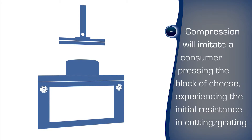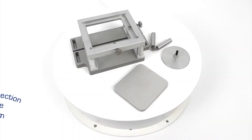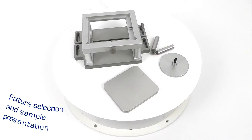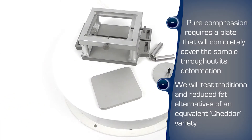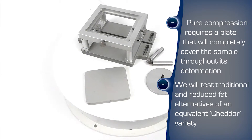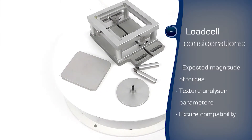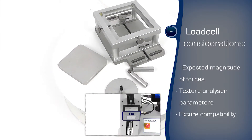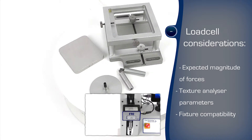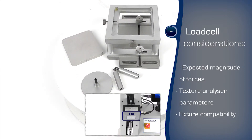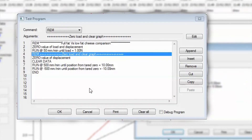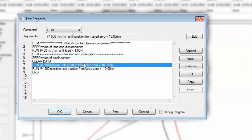A pure compression test to measure firmness will provide valuable information in determining the effects of a reduced fat formulation. The TMS Texture Analyzer is fitted with an FTC compression plate large enough in diameter for the face to remain in contact with the cheese sample for the full extent of its deformation, for consistent comparative measurement. A suitably rated load cell is used to maximise the measurement accuracy.